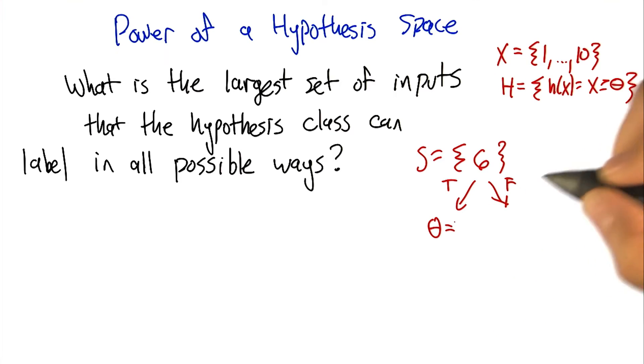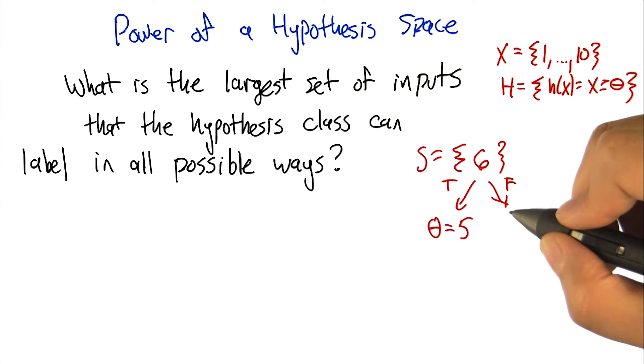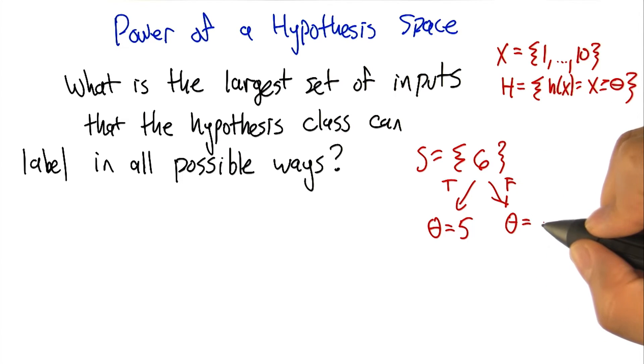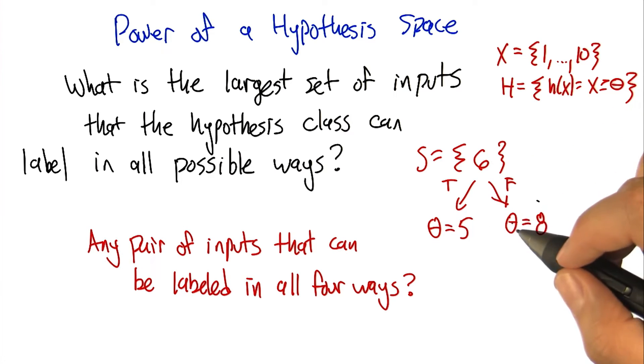If we set theta to, say, five, it'll label it as true. If we have a different hypothesis that sets theta to eight, then we can label it as false. There is a set of inputs of size one that we can label in all possible ways.